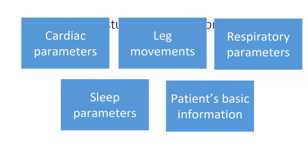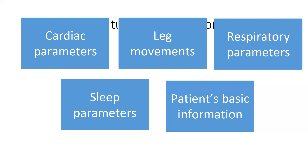A sleep study report is prepared section-wise. The first section covers the patient's basic information: age, height, weight, BMI, medications, and any comorbidities, because BMI has a definite correlation with some respiratory or sleep disorders. Medications the patient is taking can influence sleep, and other comorbidities are also related to disorders of sleep. Then we have information on sleep parameters like sleep efficiency, time in different stages of sleep, respiratory parameters, leg movements, and cardiac parameters.